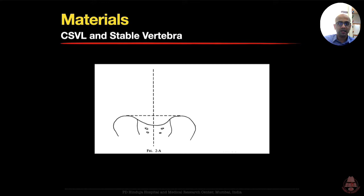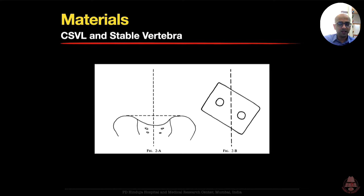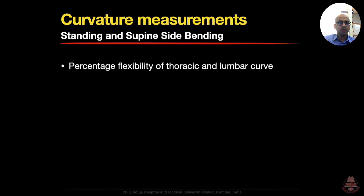The paper described the central sacral line as a line perpendicular to the intercrestal line. However, this works only if the pelvis is horizontal. We now draw the CSVL from the middle of the sacrum parallel to the edge of the radiograph. The vertebra most closely bisected by this line was defined as the stable vertebra. Curvature measurements were done on standing AP and lateral views and supine side bending films.